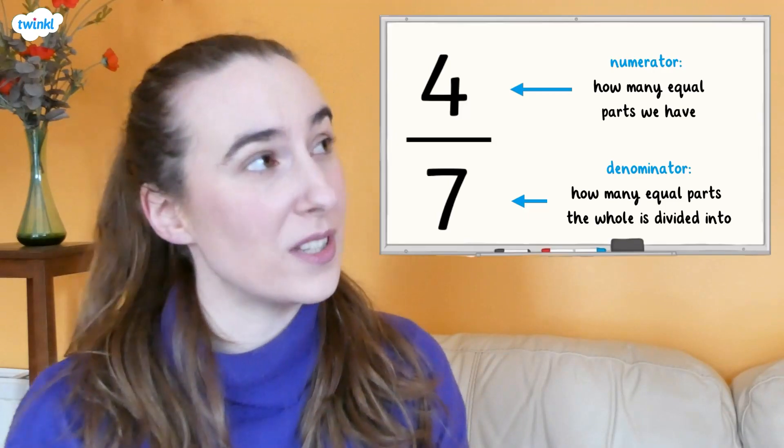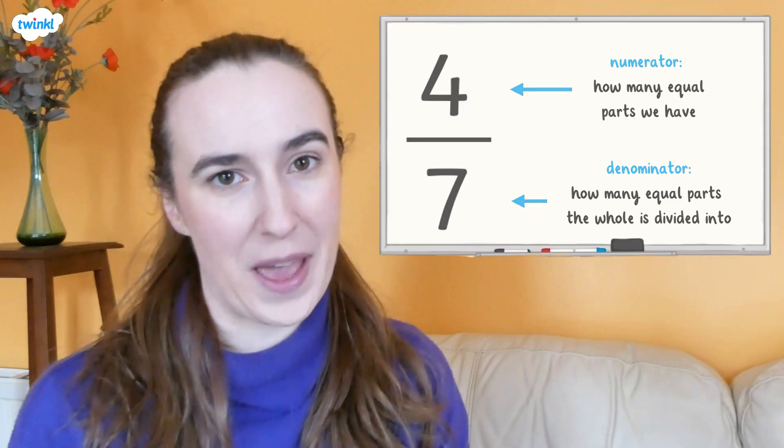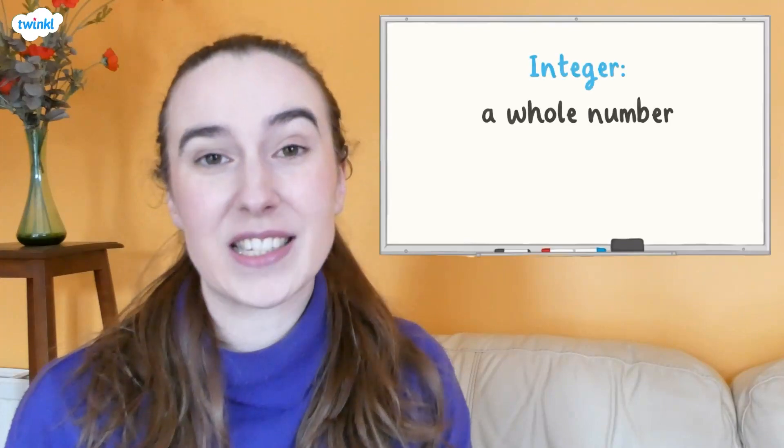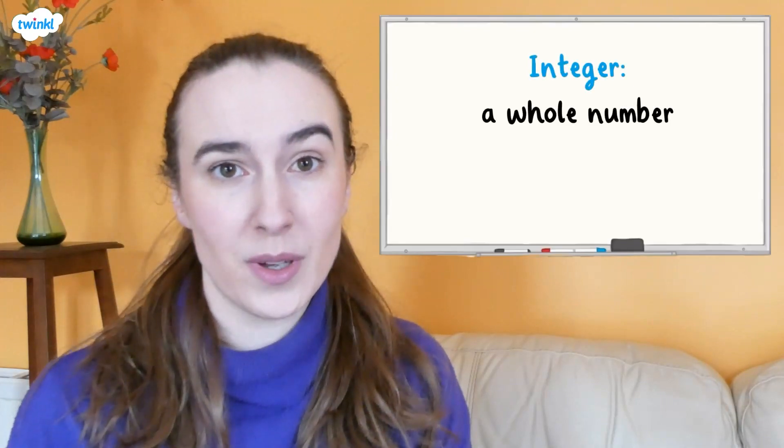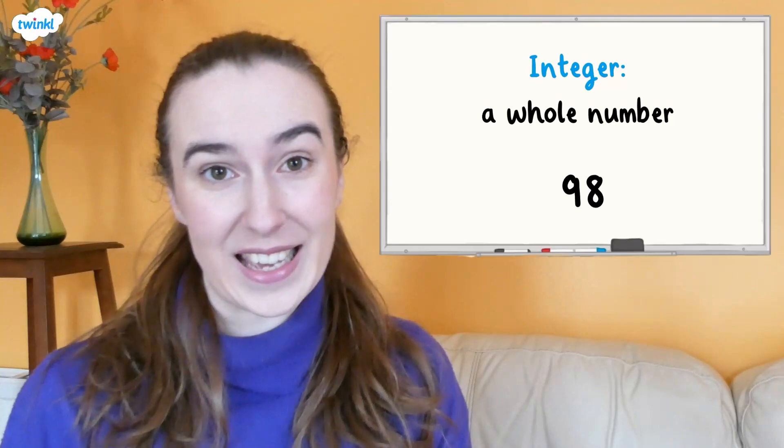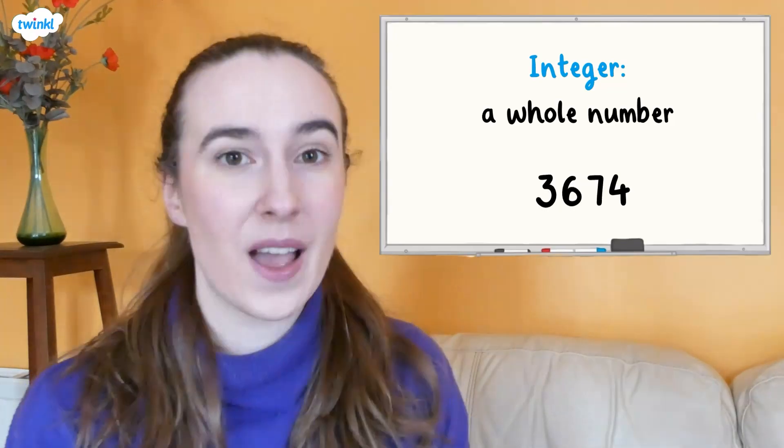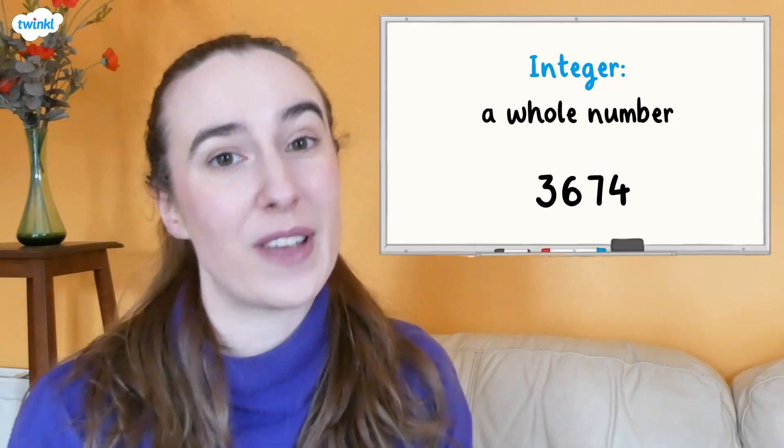In four sevenths, the whole has been split into seven equal parts and we have four of them. An integer is a whole number. So 5, 37, 98, and 3,674 are all examples of integers.